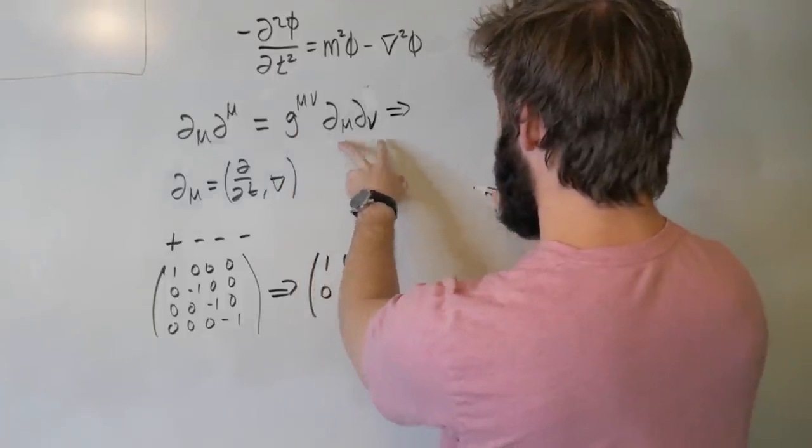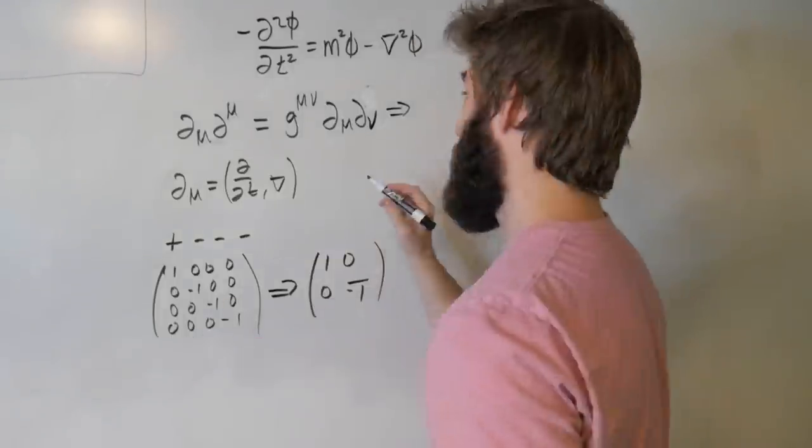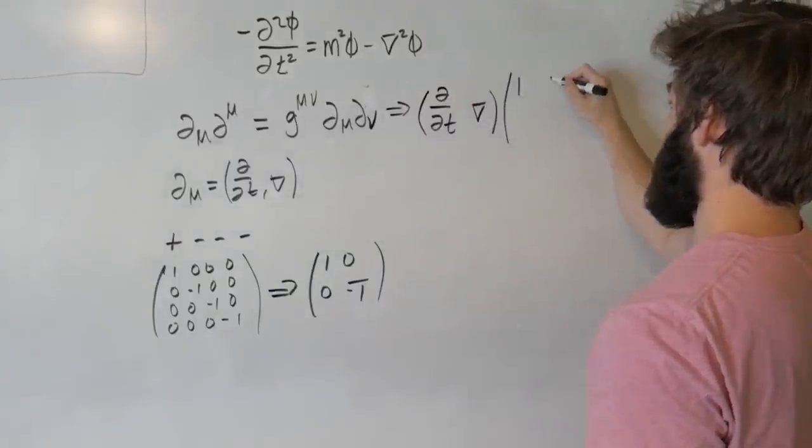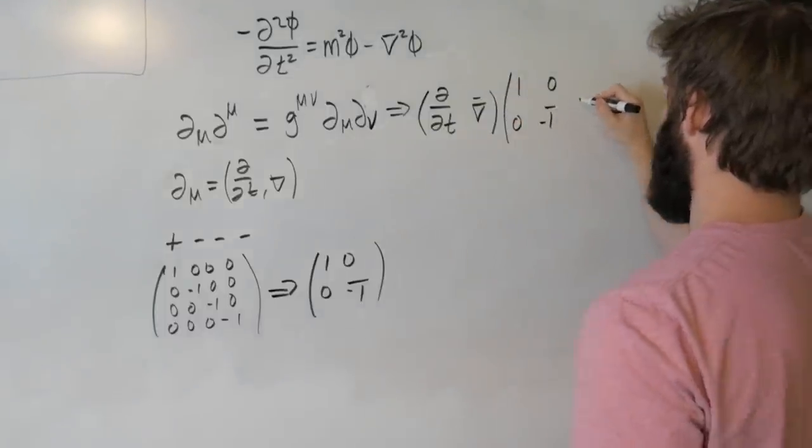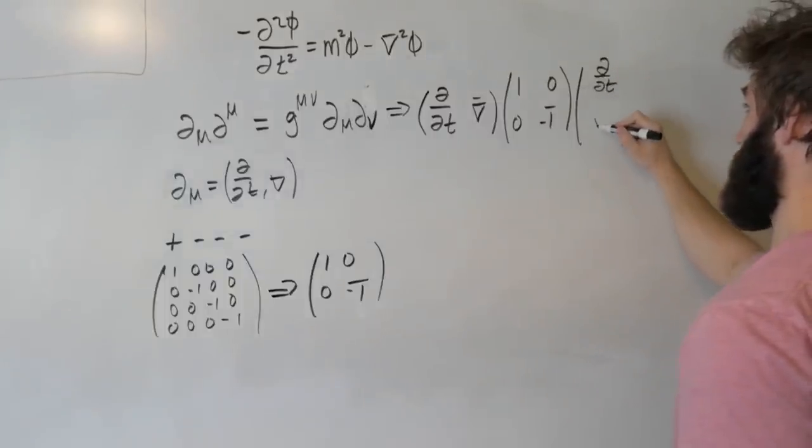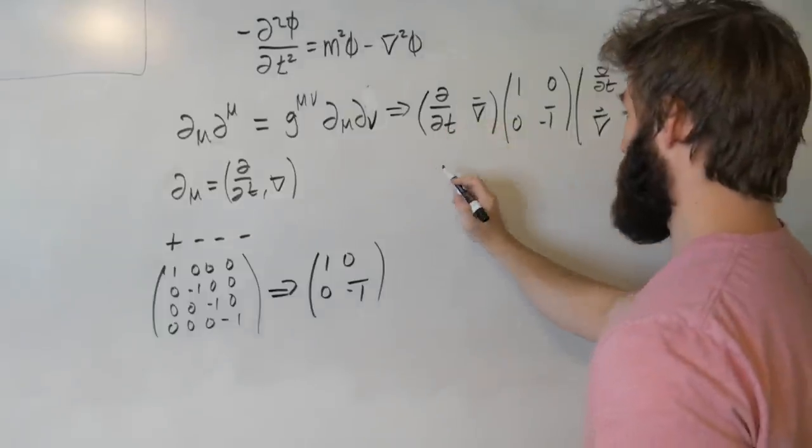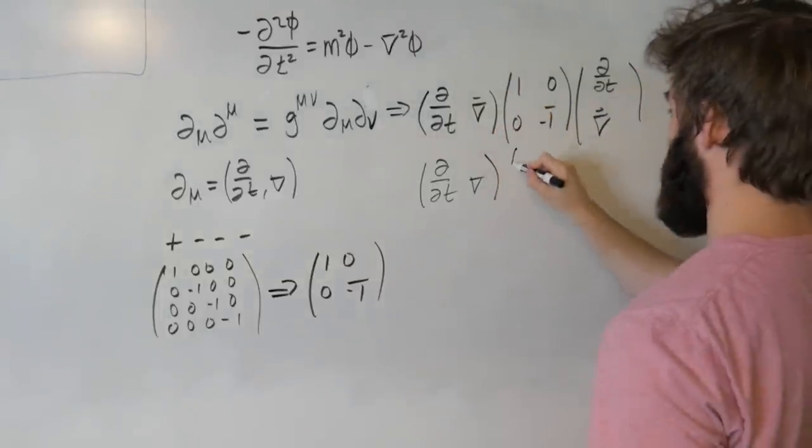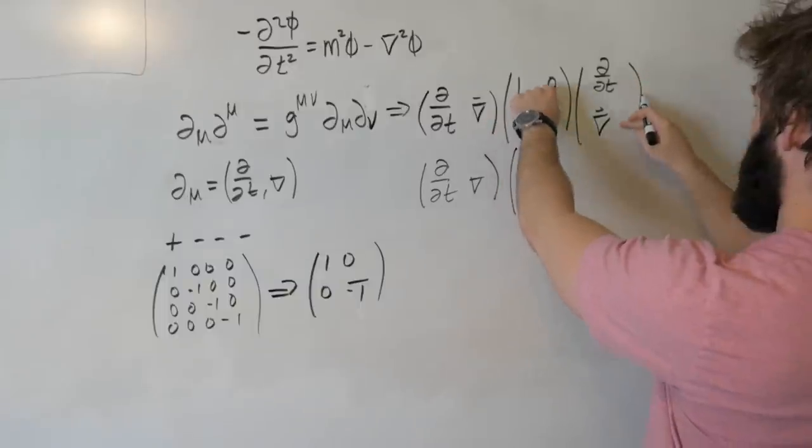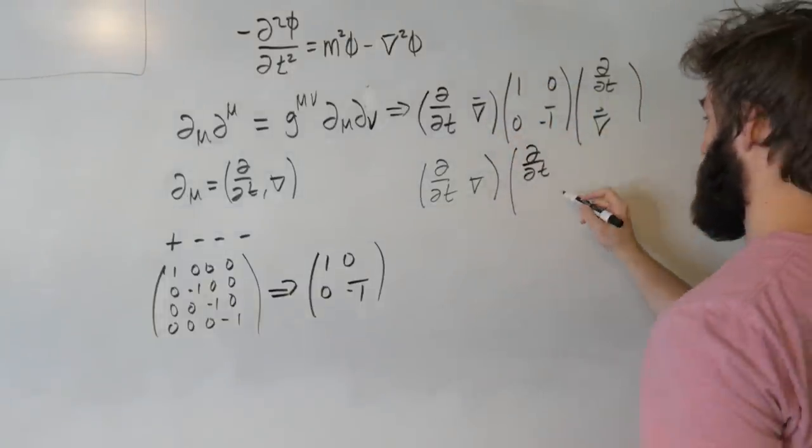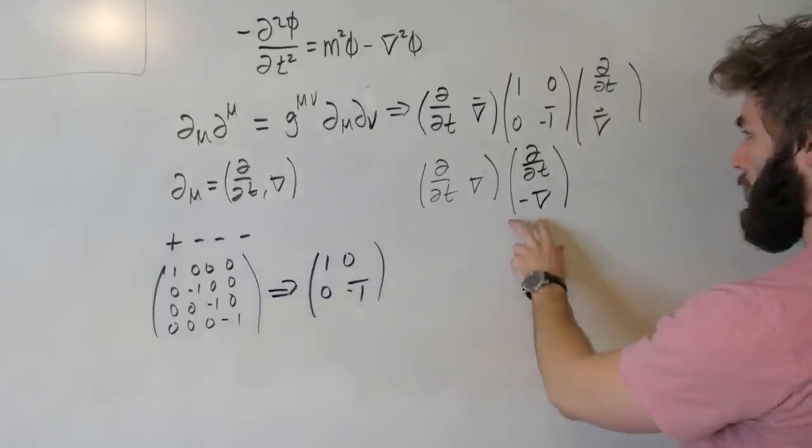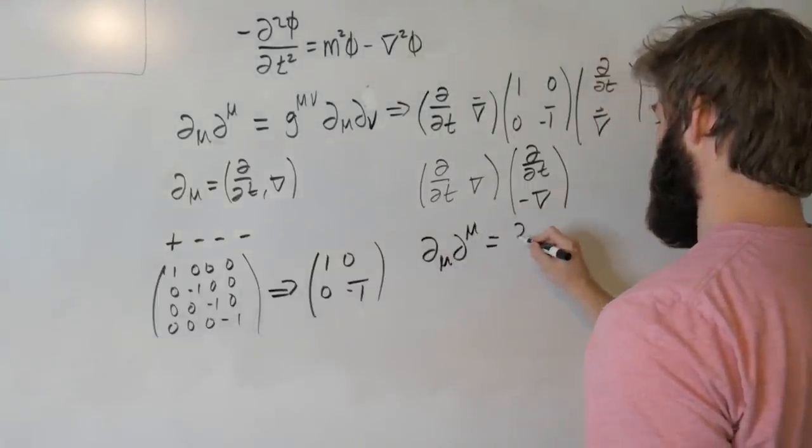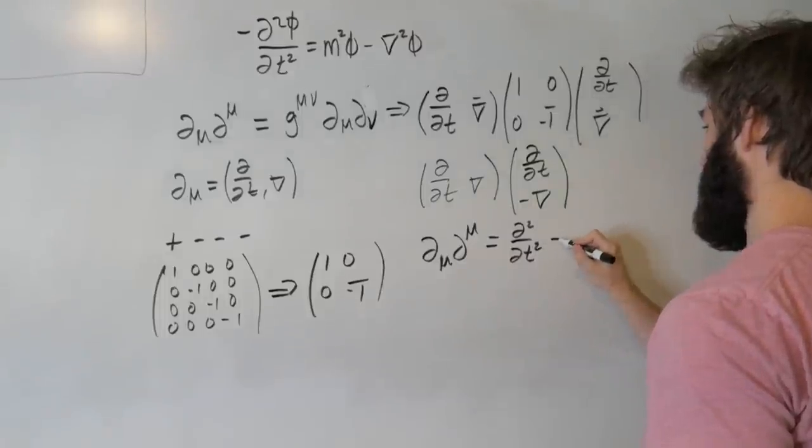So let's go ahead and carry this out. I'm going to put this metric in between both of these and express these in terms of row and column vectors. So I'm going to write this as d/dt and del, 1, 0, 0, minus 1, and d/dt and del. So this one isn't changing yet. This is just going to be d/dt and del. Then we've got a 1 times d/dt, that's still going to be a d/dt. Then we've got a 0 times that, and then we've got a 0, and a minus 1 times del. So this is going to be a minus del here. And then when we do a little matrix multiplication, what this gives us is that d_mu d^mu is equal to d squared dt squared minus del squared.